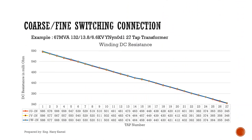For DC winding resistance, we have an example: a 467 MVA transformer, 132 over 13.8 over 6.6 kV, with vector group YNYN0D1 and 27 taps. The DC winding resistance is as shown in the curve. Tap number 1 has the highest value and tap number 27 has the lowest value.